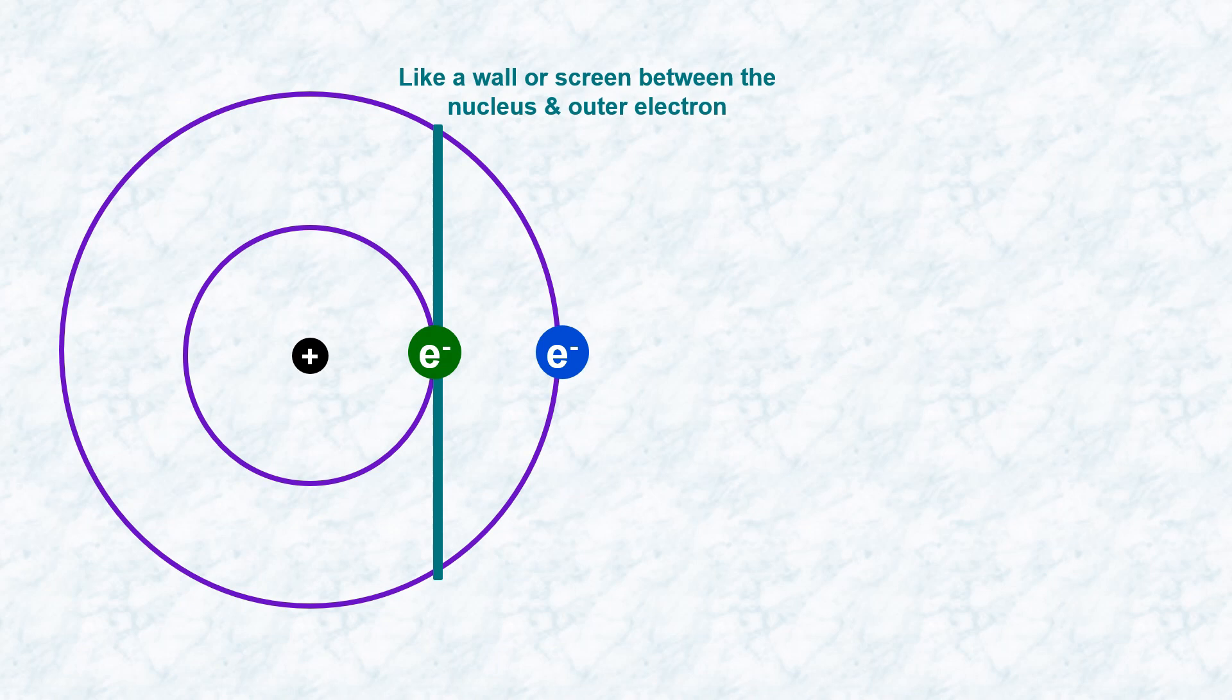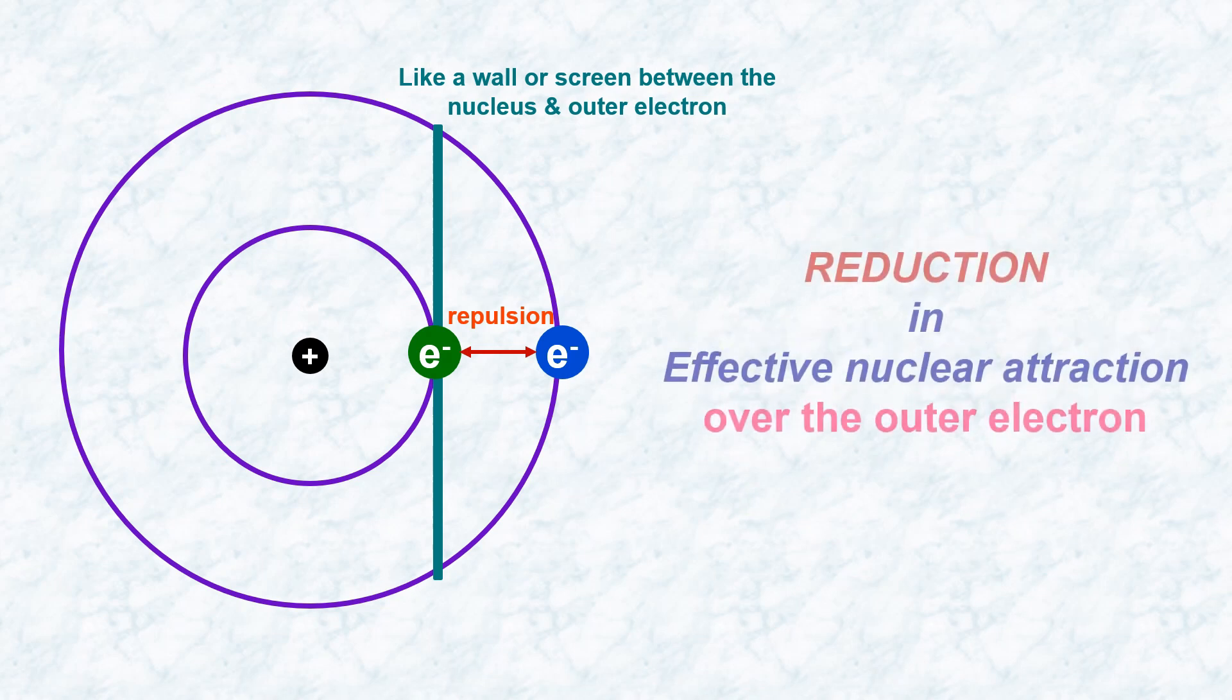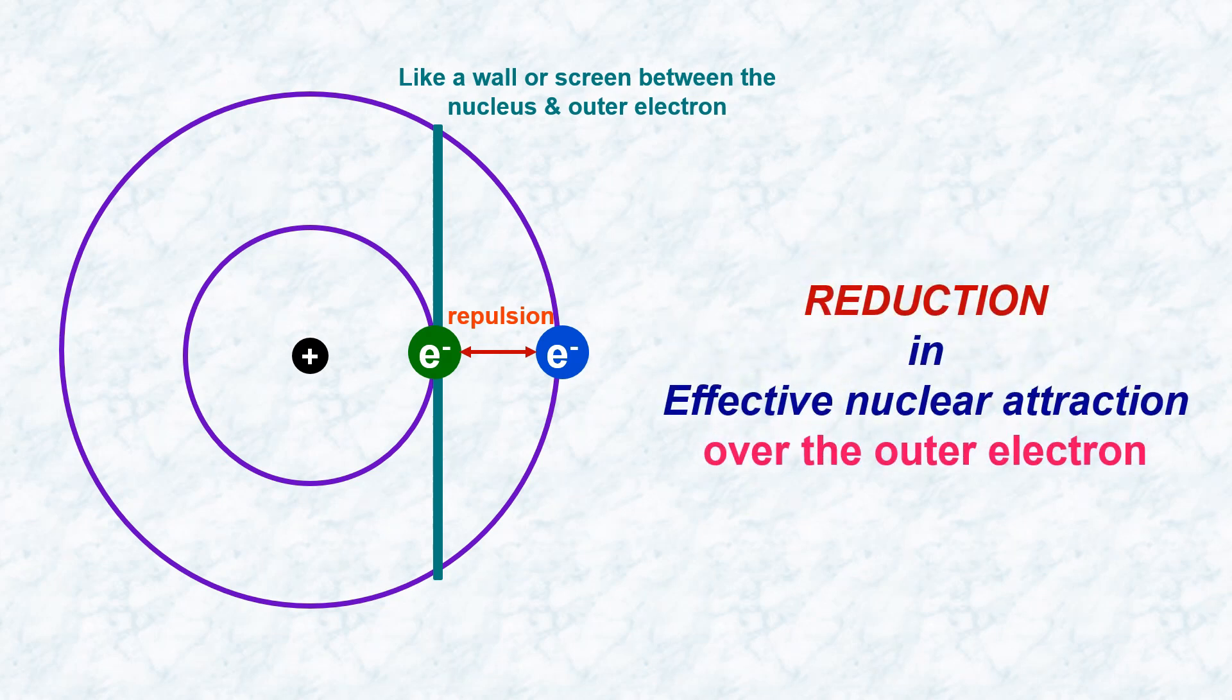Additionally, there is repulsion between the inner and outer electrons. The cumulative result is a reduction in the effective nuclear attraction over the outer electron. And this phenomenon is commonly referred to as the screening or shielding effect.